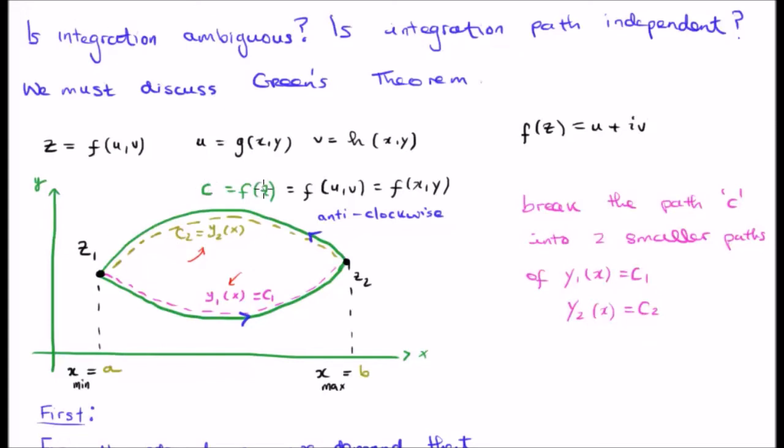So c which is a function of z, which of course therefore is a function of u and v, which of course therefore is a function of x and y. We define a positive curve as going anti-clockwise. So just to say it one more time, we break up the path c into two smaller paths, namely c1 and c2, y1 of x and y2 of x, and we join them so that their sum is equal to c.